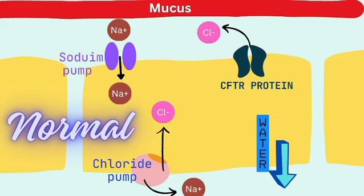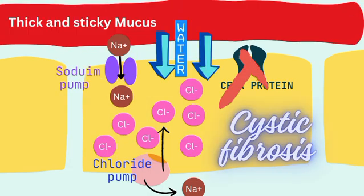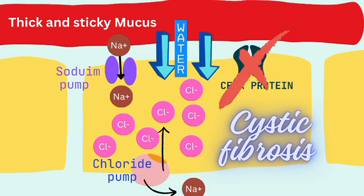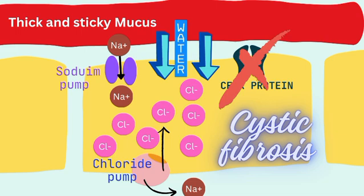This is a normal airway epithelium. You can see the active chloride pump, which pumps chloride into the cell, and the CFTR protein, which moves chloride out. Water moves out of the cell to keep the mucus normal. But look at this diagram, where the airway is affected by cystic fibrosis. Here, similar to the other diagram, the chloride pump works the same, but the CFTR protein no longer functions, so chloride does not move out. This results in more water moving into the cell by osmosis, causing the mucus to become thick and sticky.